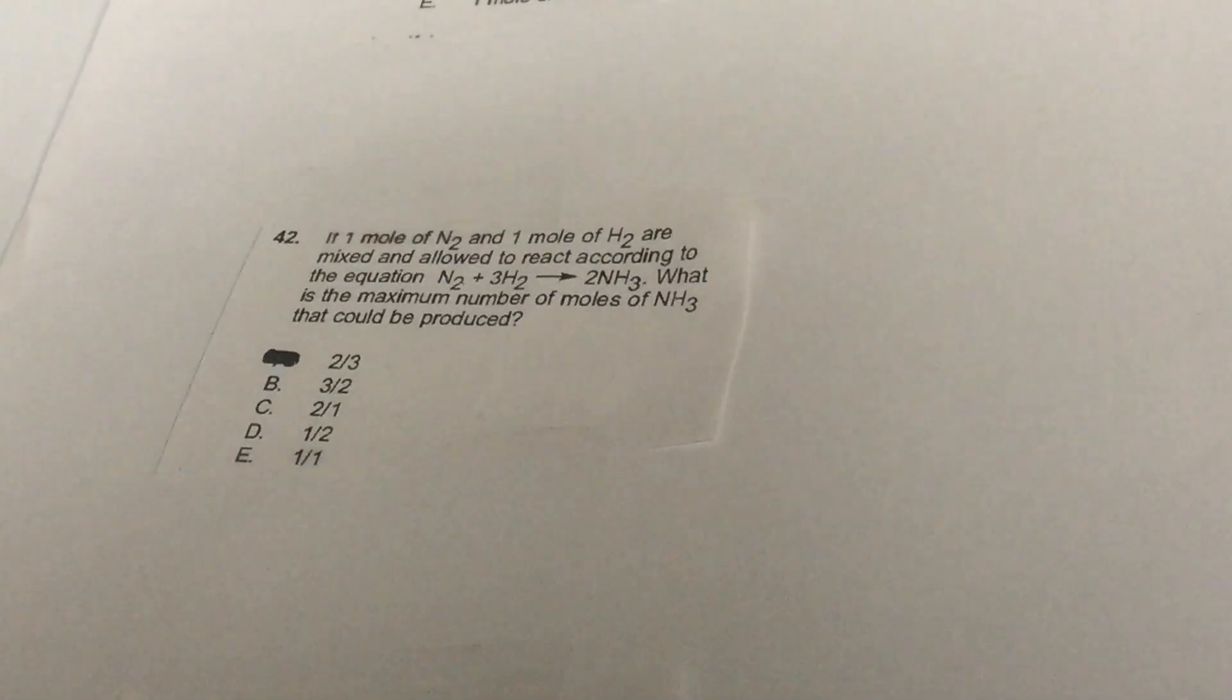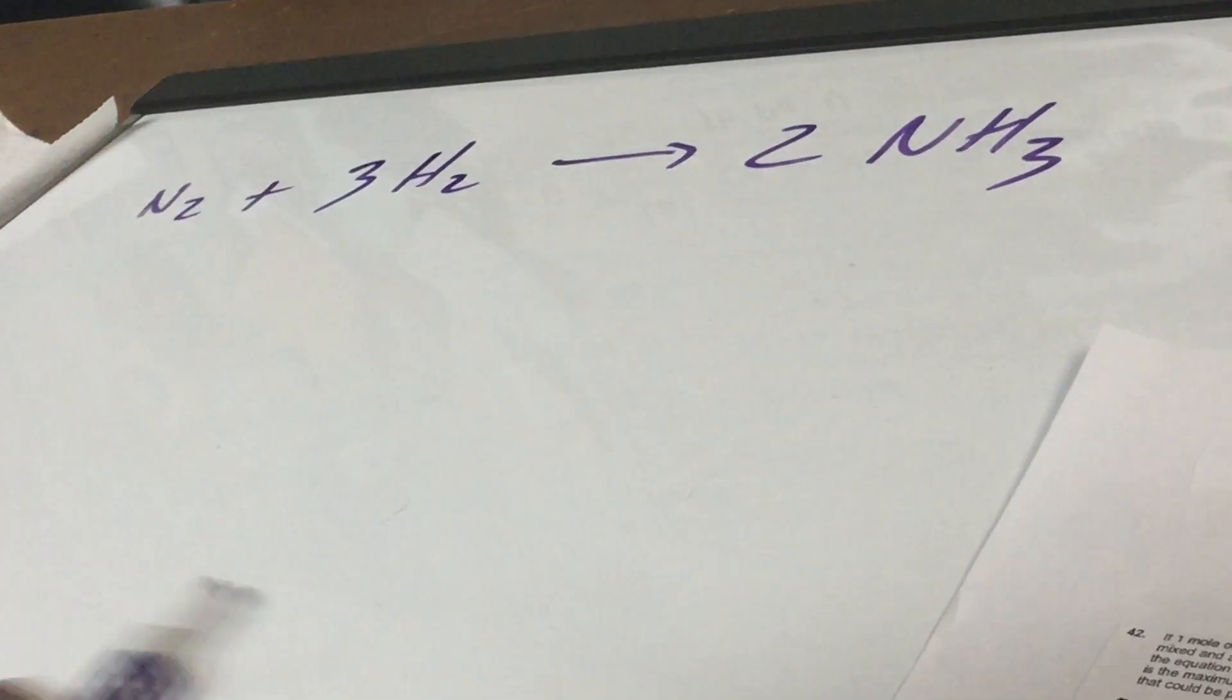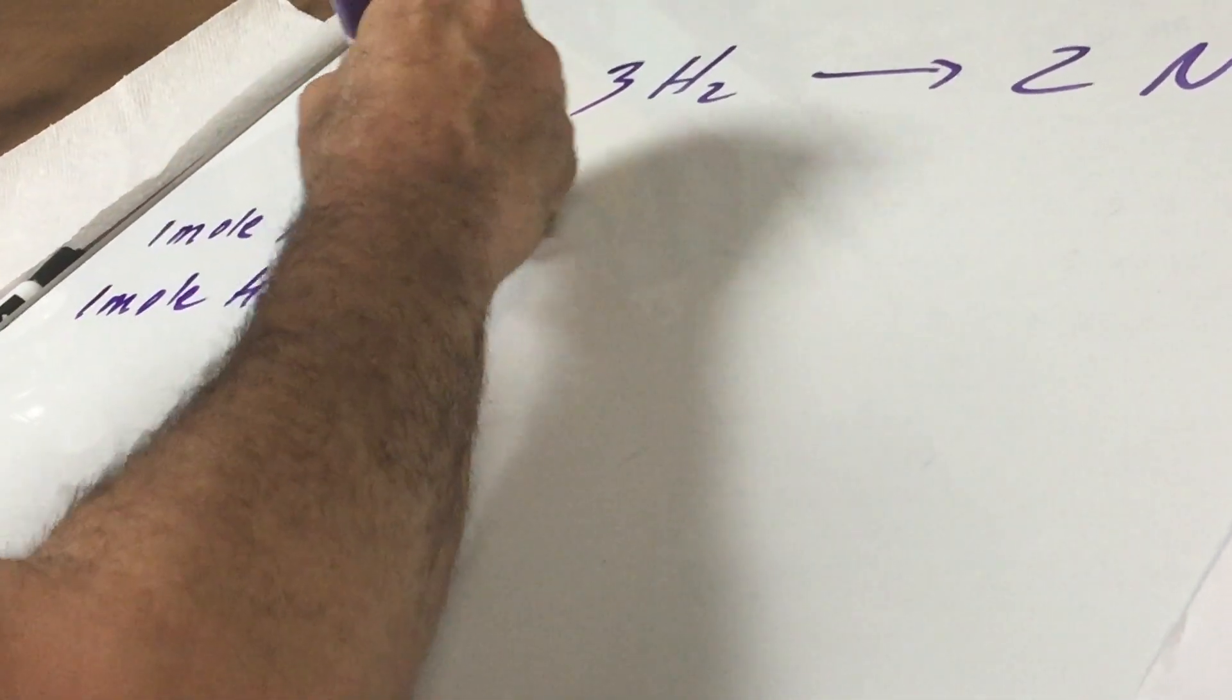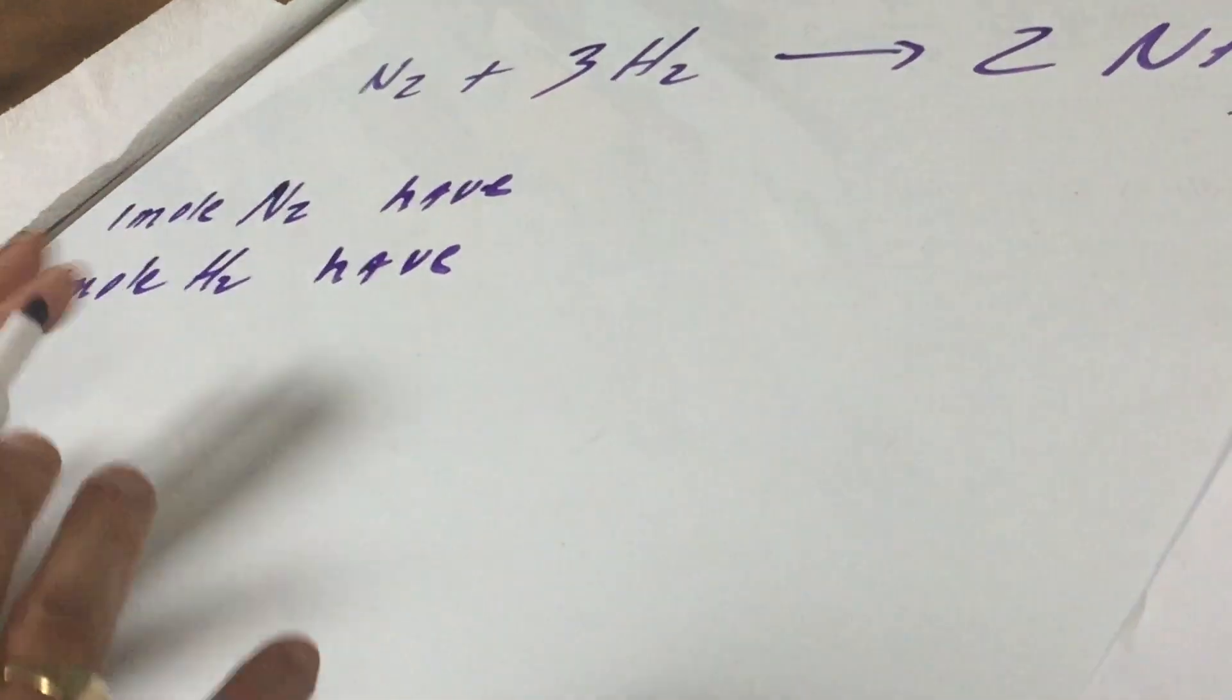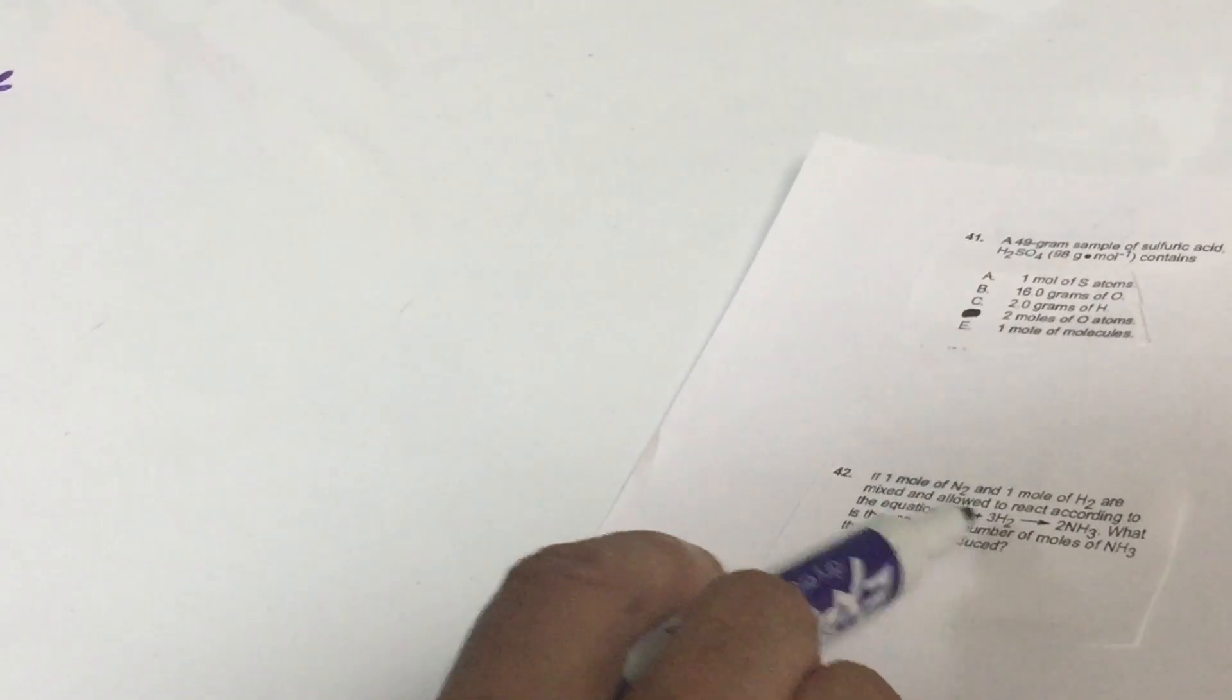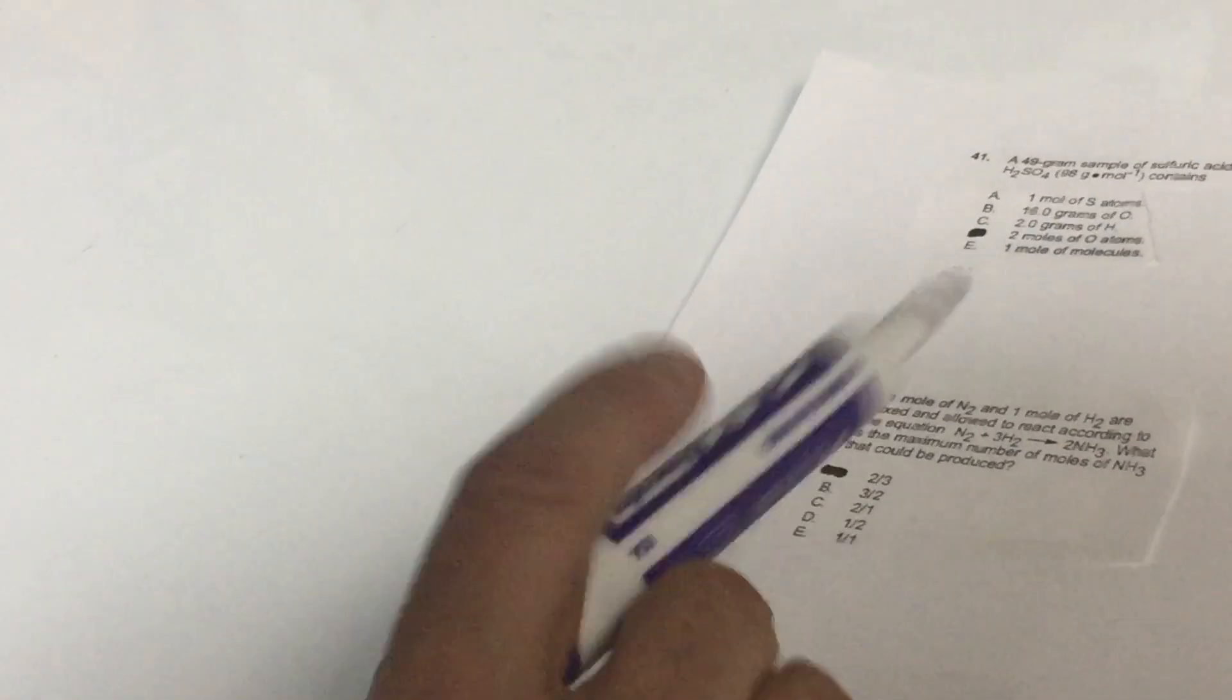Now, this next one is going to be a limiting reagent question. I did a limiting reagent question on a video. You might want to take a look at this. Now, they're going to give me nitrogen plus hydrogen, and we're going to get two moles of NH3. And then I first look to see it's balanced. It says that we have one mole of nitrogen and one mole of hydrogen. So what I do is I go off to the side, and I write one mole of nitrogen. And they gave me one mole of hydrogen. And what I do is I write the word have, meaning this is what I have at the start. Since two moles are given, we know this is going to be a limiting reagent problem. And they say to you that one mole of each of these nitrogen and hydrogen are mixed and allowed to react according to this equation. I hope you recognize this equation as the famous Haber process. What is the maximum number of moles of ammonia that could be made? And notice they just give you these fractions.